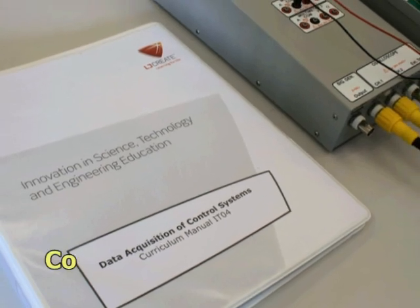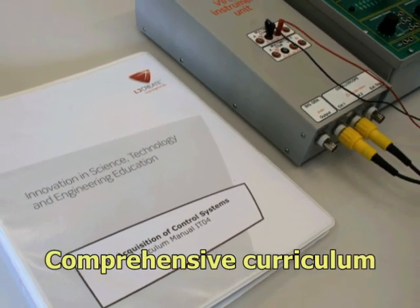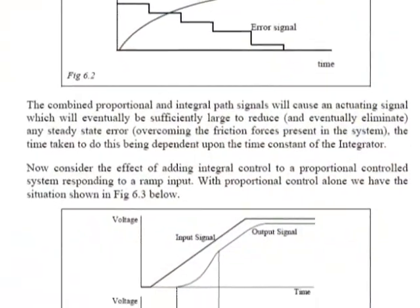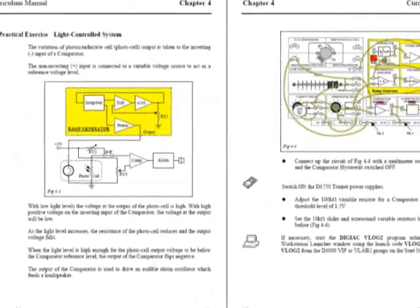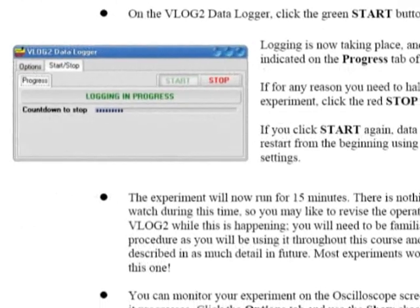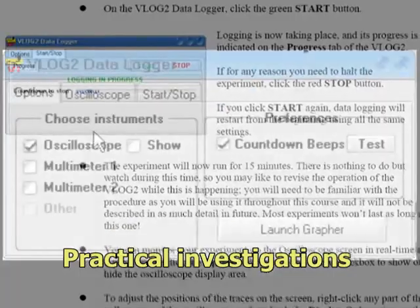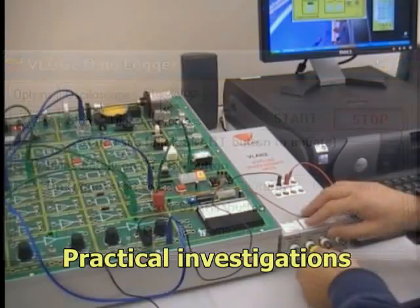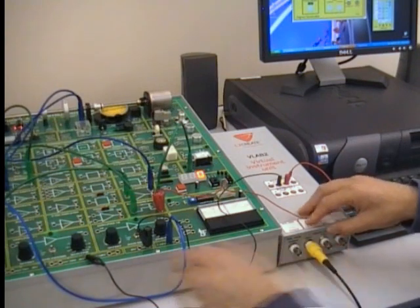The package includes a comprehensive 150-page curriculum manual with underpinning theory, practical exercises, continuous and end-of-topic assessment. The curriculum includes practical investigations for learners to perform on the D1750 trainer.